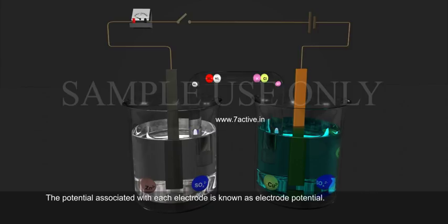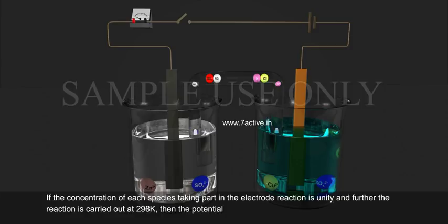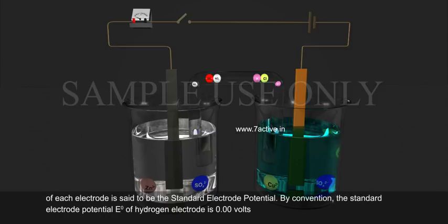The potential associated with each electrode is known as electrode potential. If the concentration of each species taking part in the electrode reaction is unity and the reaction is carried out at 298 Kelvin, then the potential of each electrode is said to be the standard electrode potential. By convention, the standard electrode potential E⁰ of the hydrogen electrode is 0.00 volts.